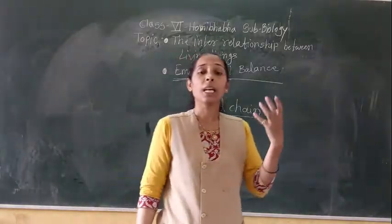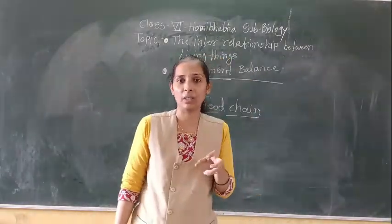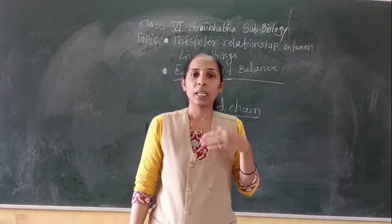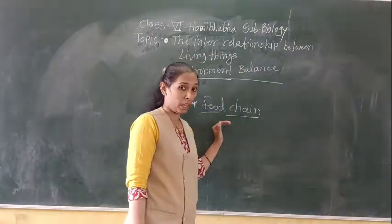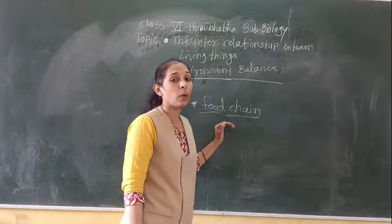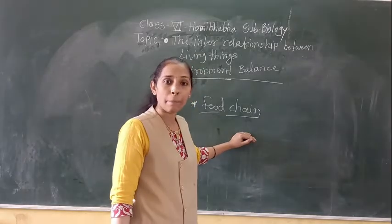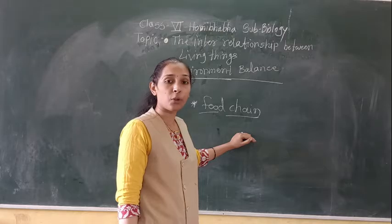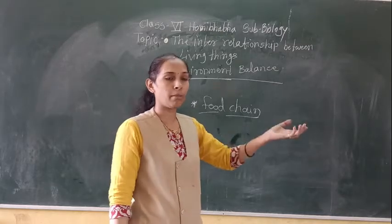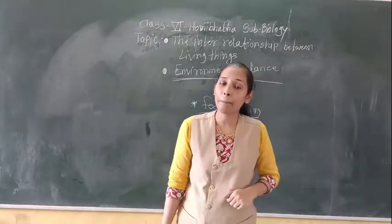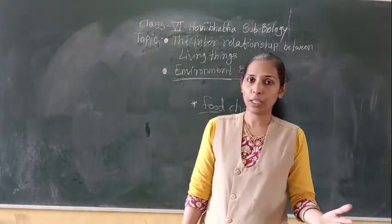What is meant by the food chain? Animals eat smaller animals, and bigger animals eat those — this sequence is called a food chain. Which comes first in the food chain? Green plants, because green plants are the producers. All animals directly or indirectly depend on green plants for their food.